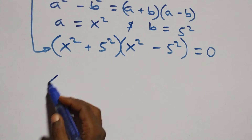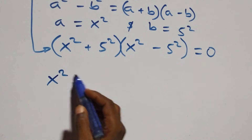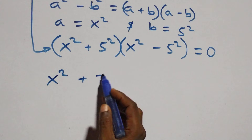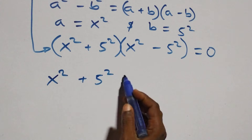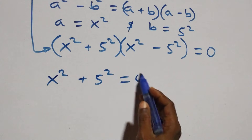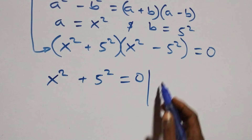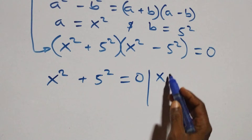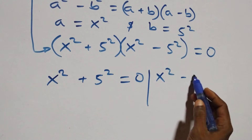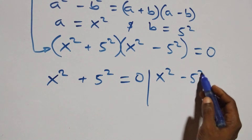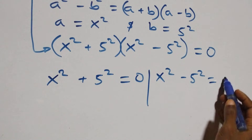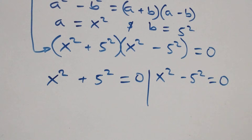We now have two possible cases. The first case: x squared plus five squared equals zero. The second case: x squared minus five squared equals zero.